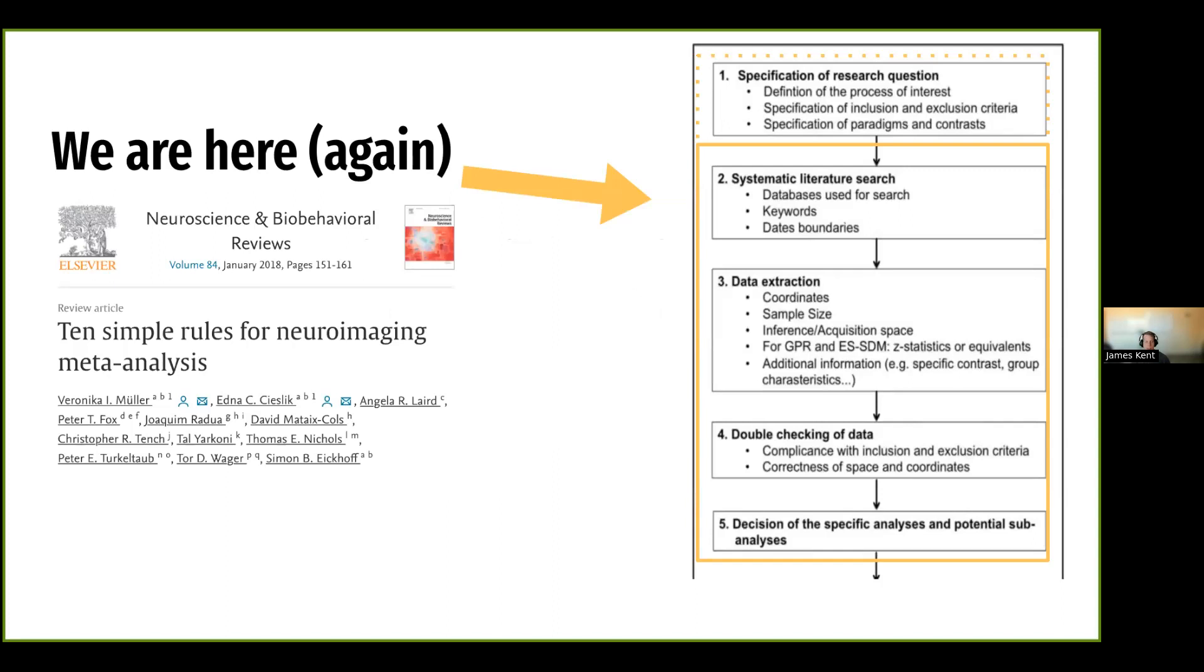Just to orient you again, in Katie's lecture, she covered these steps of systematic literature search, data extraction, double-checking of data, and decision of specific analyses and potential sub-analyses, as she pulled from the 10 Simple Rules for Neuroimaging meta-analyses. And I will be covering these same steps in a practical section.